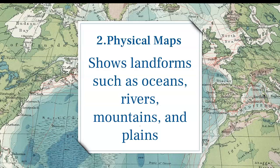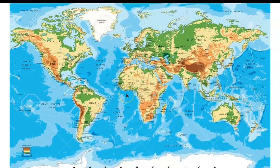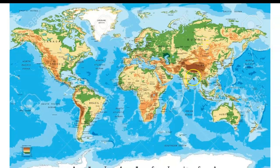The next type of map is a physical map. This shows landforms such as oceans, rivers, mountains, and plains. Here's the world map — they also have the political borders on here, but that's not the main focus. The main focus are mountains, which you see here in brown. So the Rocky Mountains here, Sierra Nevada is here, the Andes here. Green is a lush area — this is near the Amazon River. The yellow area is a plains area; we have those in the middle of the United States, in Brazil, in Russia, and you can see all the mountains in China, Southern Africa, and East Africa.